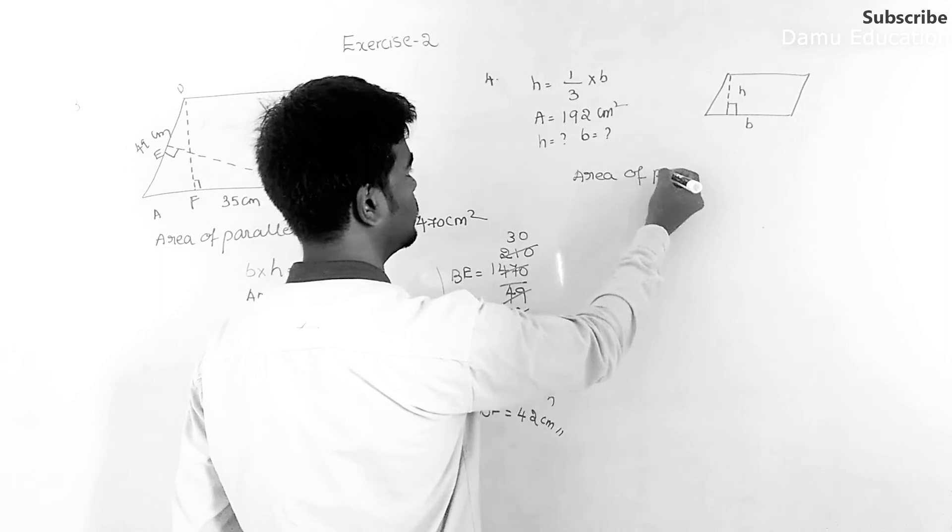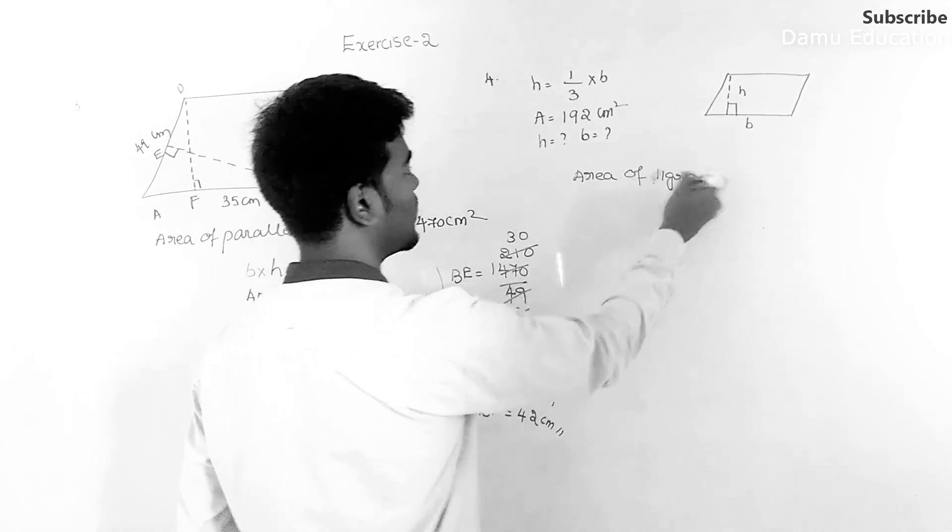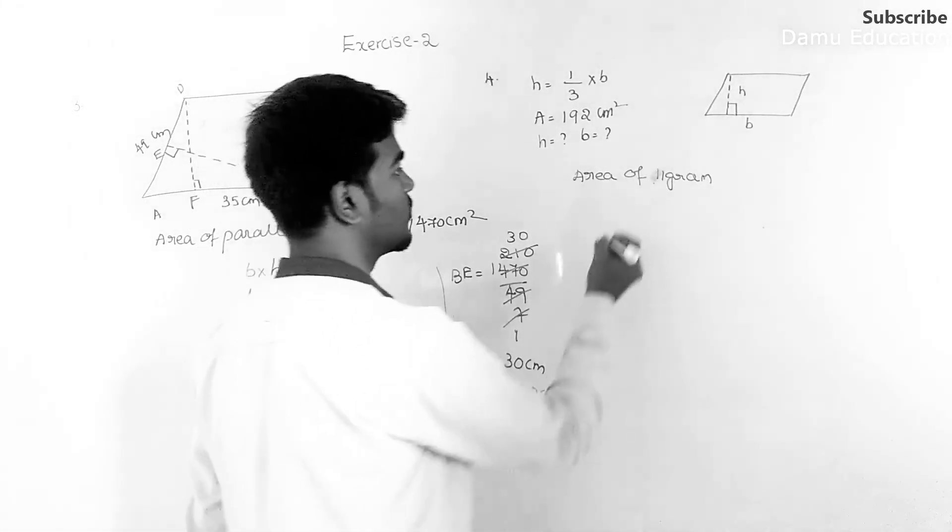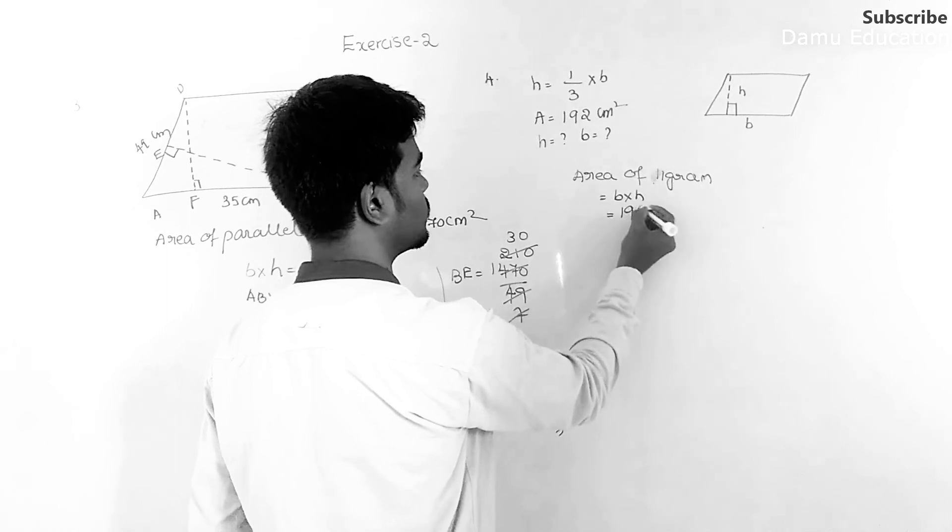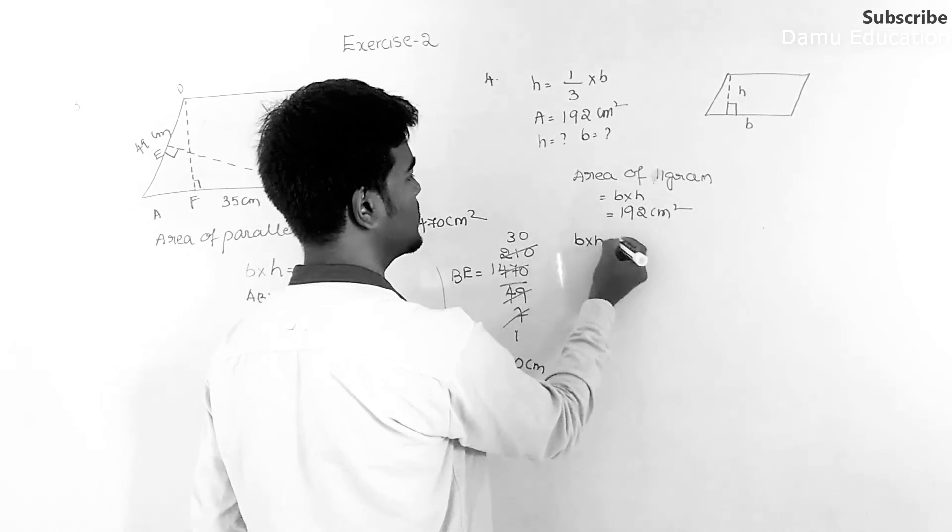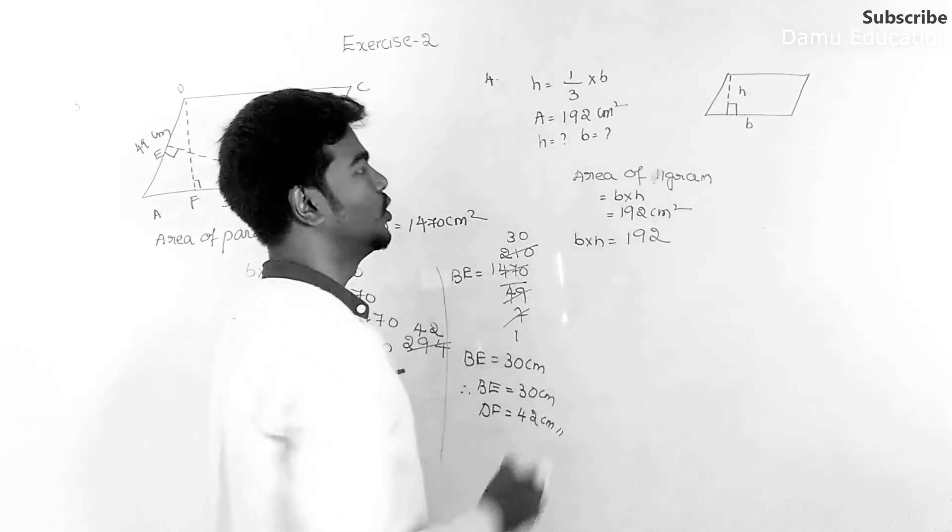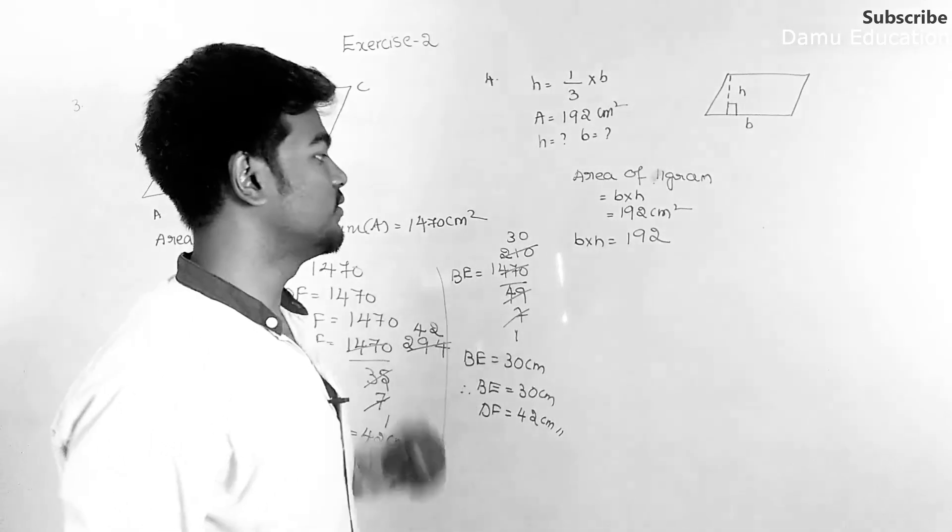Then let the area of parallelogram will be equal to base into height. That will be equal to 192 centimeters squared. So base into height equals 192. The height will be one-third of its base, means 1/3 into B.